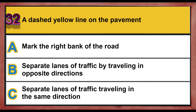Question 32. A dashed yellow line on the pavement: A. Marks the right bank of the road. B. Separates lanes of traffic traveling in opposite directions. C. Separates lanes of traffic traveling in the same direction. Correct answer is B: Separate lanes of traffic traveling in opposite directions.